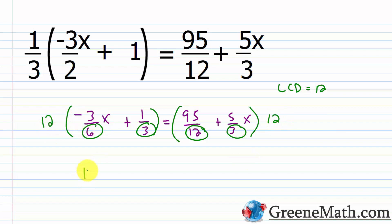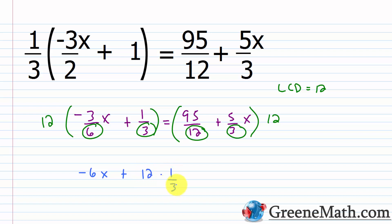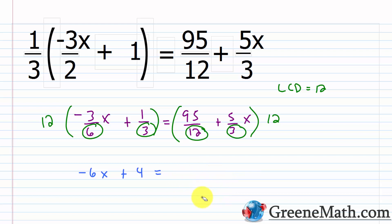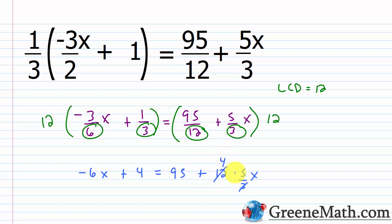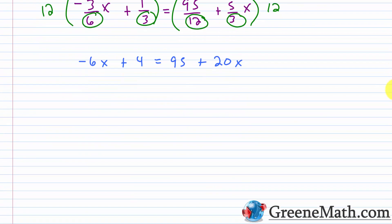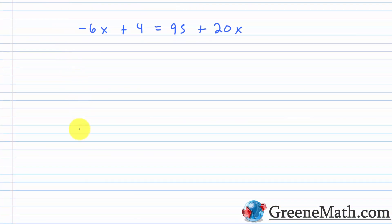Multiplying both sides by 12: 12 times negative 3/6 x — 12 cancels with 6 giving 2, and 2 times negative 3 is negative 6, so negative 6x. Then 12 times one-third is 4. On the right, 12 times 95/12 — the 12s cancel — giving 95. And 12 times five-thirds x — 12 cancels with 3 giving 4, and 4 times 5 is 20 — giving 20x. Now we have a fraction-free equation.